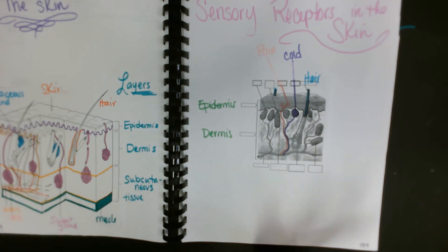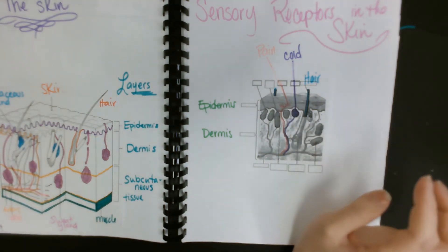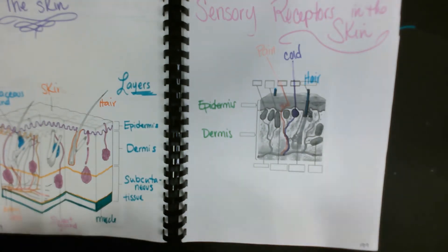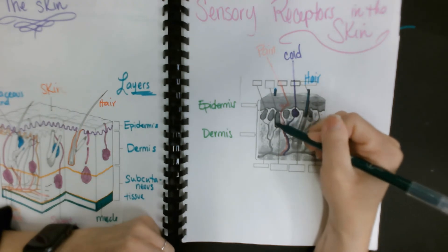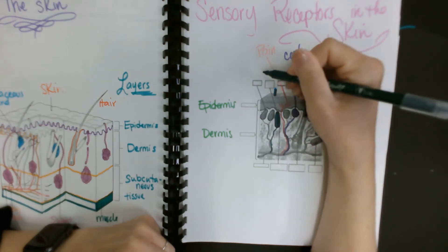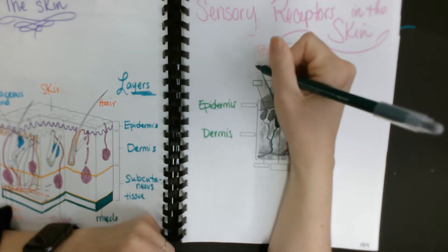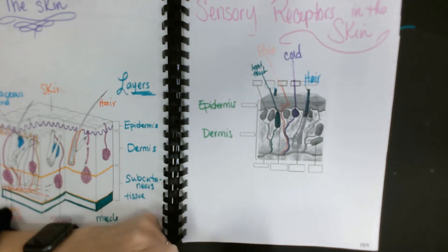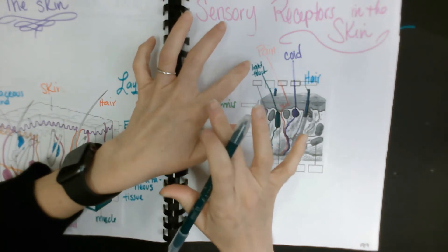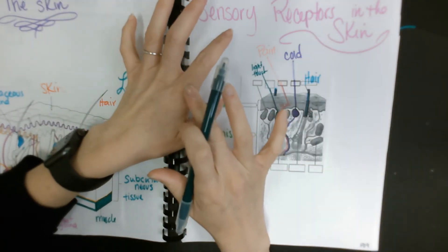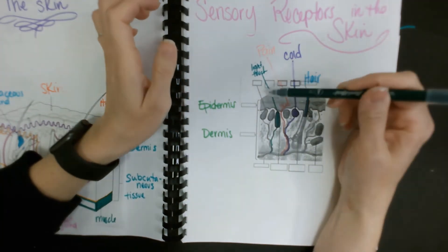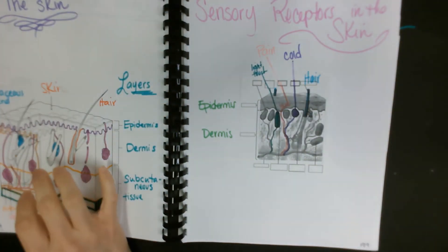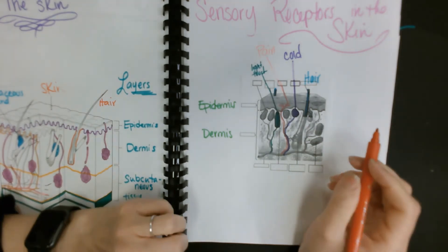Then you have your light touch. The next one that you have here, this oblong looking receptor, is the light touch. Anything that you might feel that barely, barely touches your skin—the way or the reason why you can feel it is because that receptor picks it up. Anything that is of a light touch.